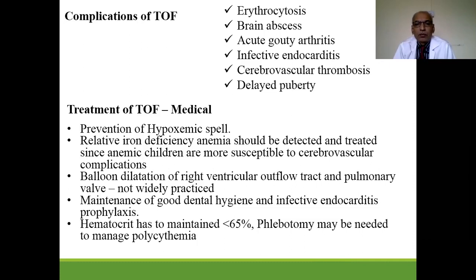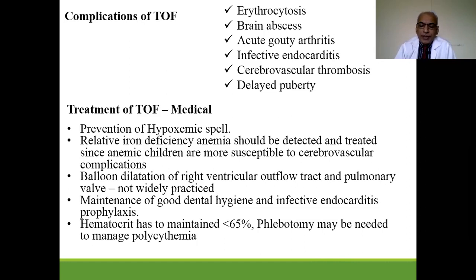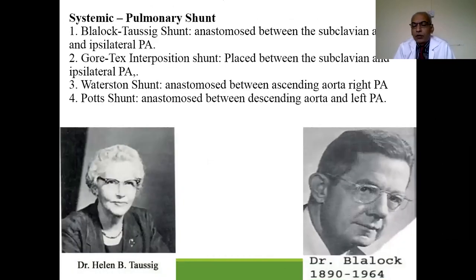Medical treatment of tetralogy of Fallot involves treatment and prevention of hypoxic spells, iron supplementation for iron deficiency anemia, balloon dilatation of right ventricular outflow where there is obstruction, good dental hygiene to prevent infective endocarditis, and maintenance of hematocrit.